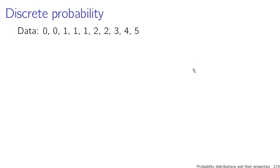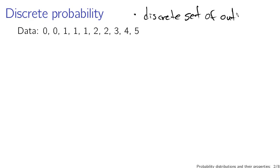There are two main kinds of probability: discrete and continuous. Discrete probability is what you get if you have only a specific set of outcomes — a discrete set of outcomes. These outcomes can be anything: they can be the outcomes of a measurement, they can be responses in a survey, they can be any sort of data set. For example, if this is your data set: 0 0 1 1 1 2 2 3 4 5.